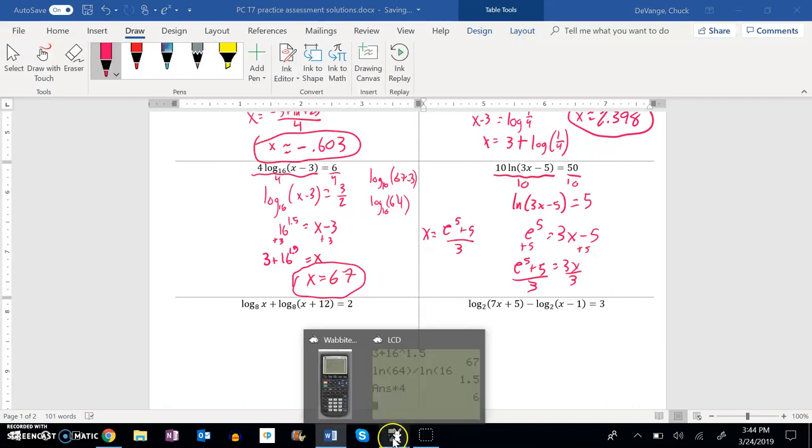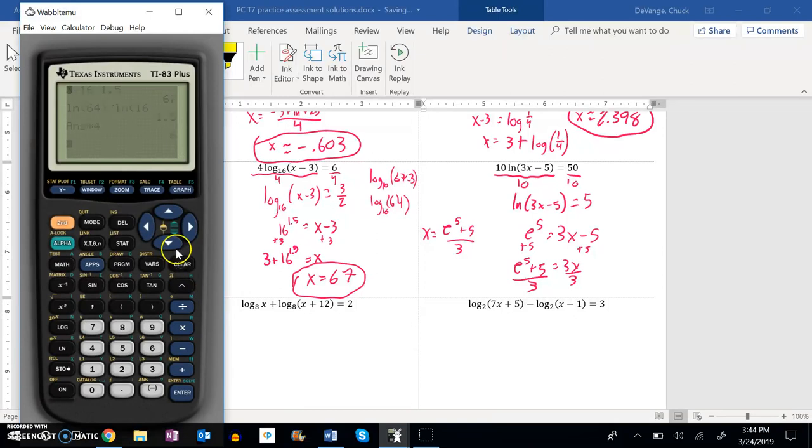And let me do that on my calculator. So e to the fifth, close off those parentheses, plus 5. And then that whole thing is going to get divided by 3.